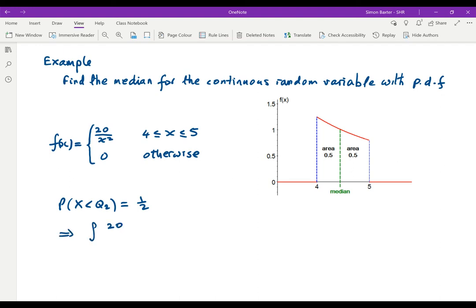Integrating, we get -20/x between 4 and Q₂ is equal to 0.5.